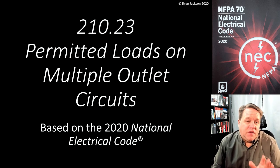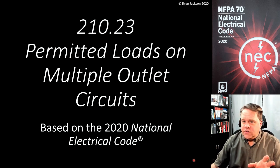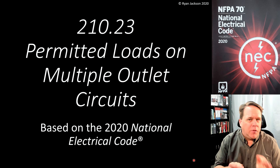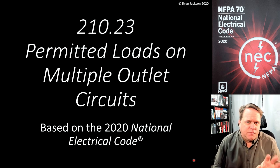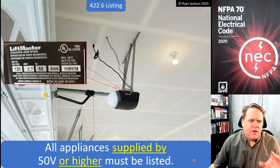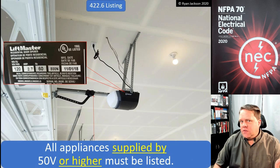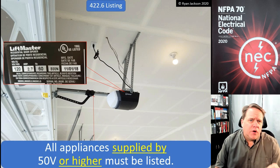This is going to be based on the 2020 National Electrical Code, and there were some changes that helped to clarify it a little bit — some wordsmithing. But let's remember that we're talking about appliances first, so we need to go to Article 422, which is the appliance article.